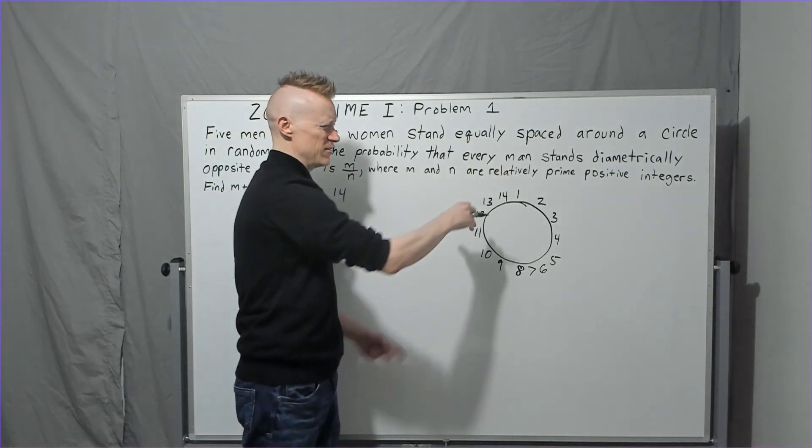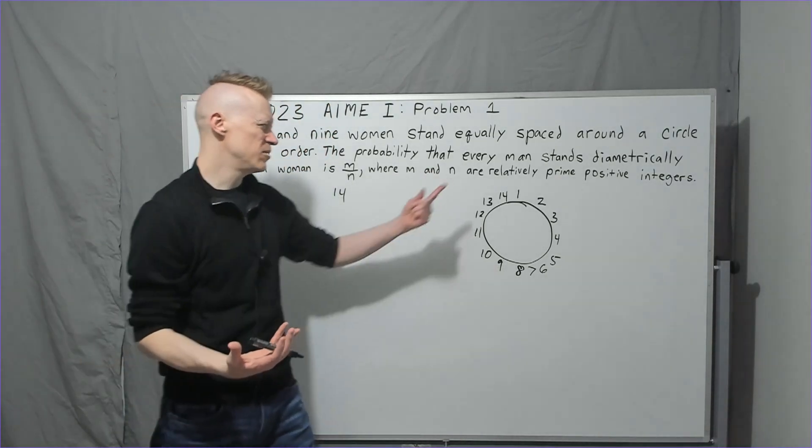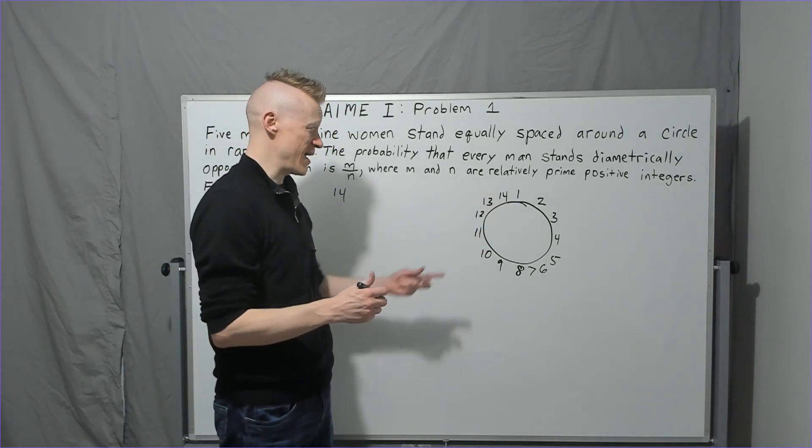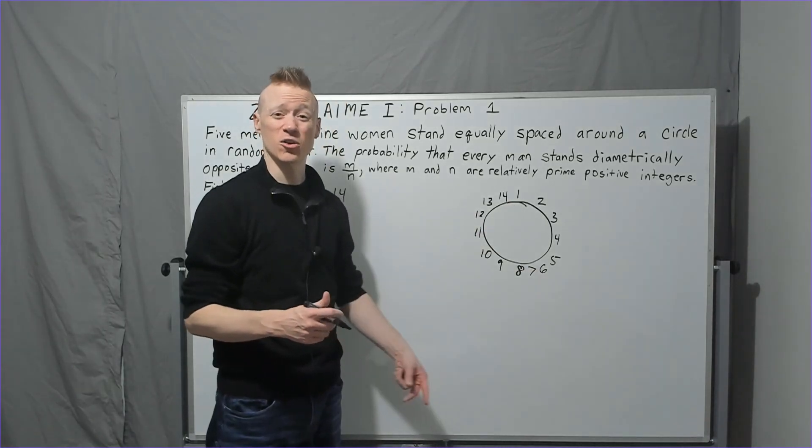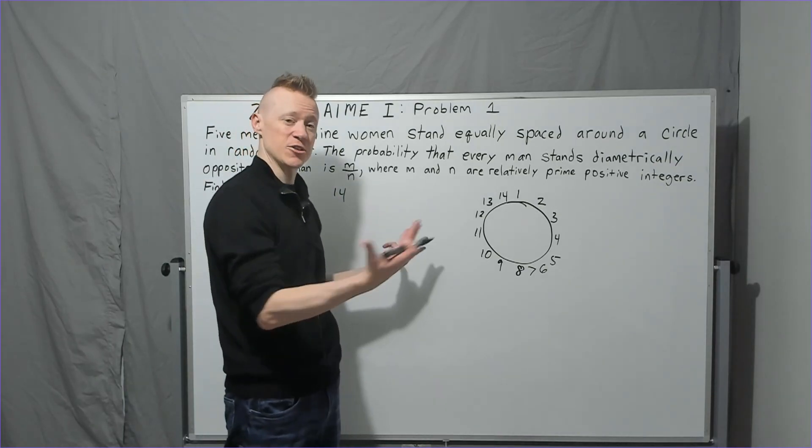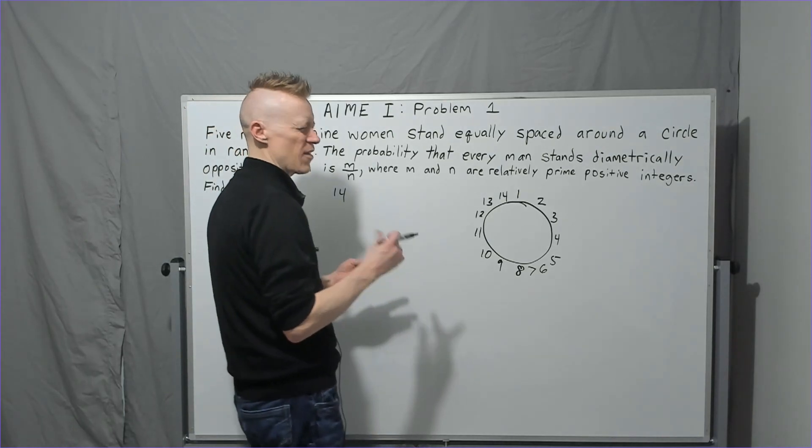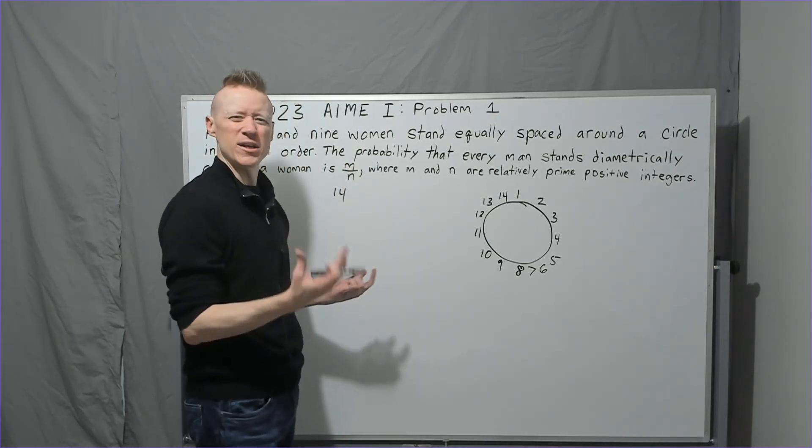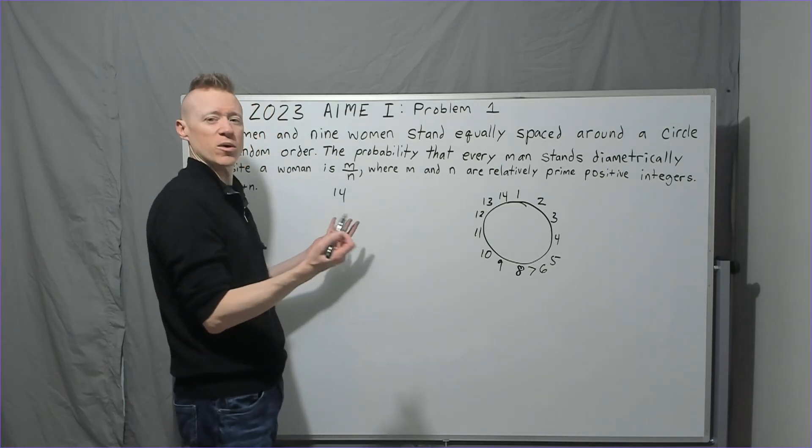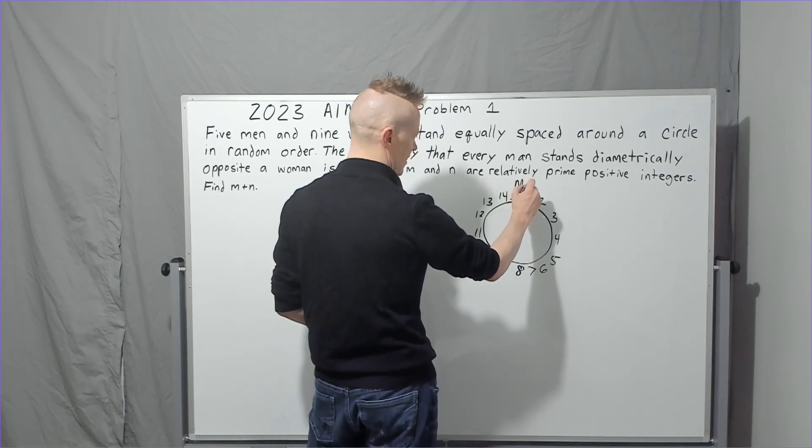Five men, nine women. How are we going to do this then? Let's say we only really care about if the men are standing diametrically opposite a woman. Why don't we just place the men then? If we place the men and none of them are across from each other, every other spot would be a woman and they would be diametrically opposite a woman. There's another concept within probability that we use a lot: fixed position. You're going to fix one of the people. I'm going to take this number one spot here and we're going to say that is one of the men, man one.